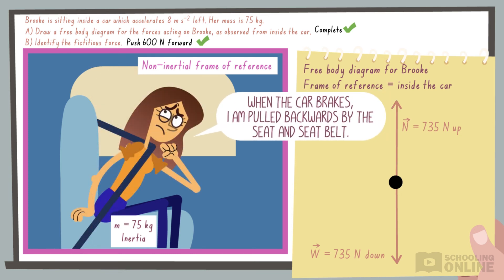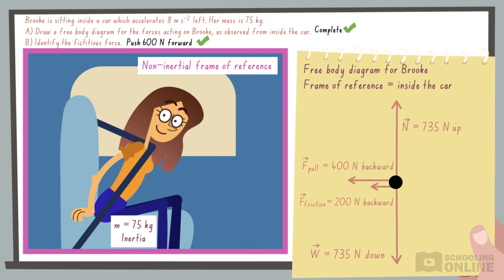When the driver pressed the brakes, friction at the wheels made the car slow down. Some of this force was transmitted to her body through the seat and seat belt. The forward push is fabricated to counteract the forces from the seat and seat belt.